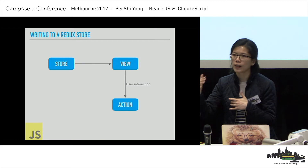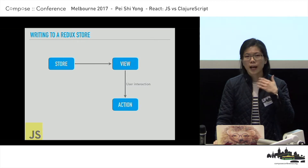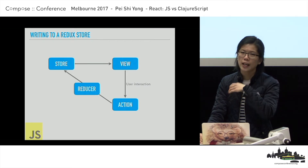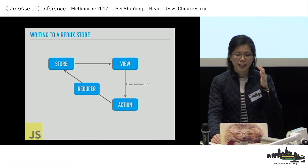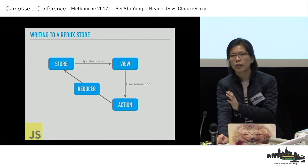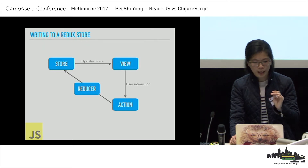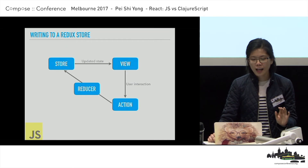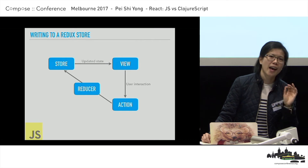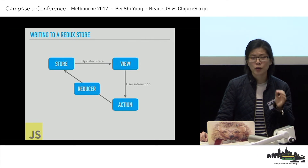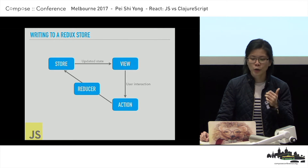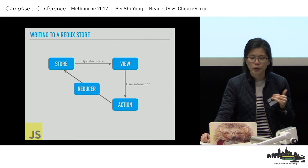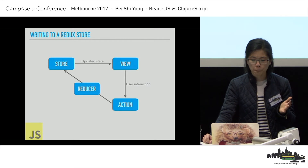With Redux, you have a global store data object containing all the application state. The view uses the data in the store to display the view. When the user interacts with the view, you dispatch an action, which gets handled by a reducer, which updates your store, and then the store updates get rendered onto the view again. This feels to me like a lot of boilerplate — every time you want to add new data into your store, you need to create a new reducer and one or more new actions, depending on how many ways you can update your data.